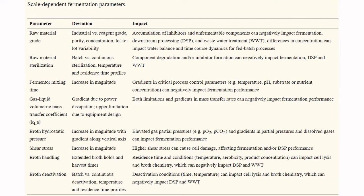Parameters to consider during scale-up include raw material grade — at laboratory scale, reagent-grade products are used, but at industrial scale, waste products from other industries are used, so impurity, concentration, and lot-to-lot variation will be higher and must be controlled. Raw material sterilization also changes — small-scale uses batch mode, while large scale requires continuous sterilization. Failure to adapt affects downstream processing and wastewater treatment.